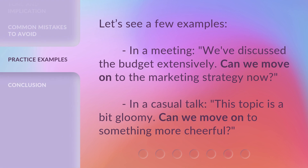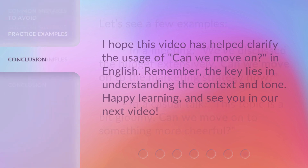Let's see a few examples. In a meeting: 'We've discussed the budget extensively. Can we move on to the marketing strategy now?' In a casual talk: 'This topic is a bit gloomy. Can we move on to something more cheerful?' I hope this video has helped clarify the usage of 'can we move on' in English.